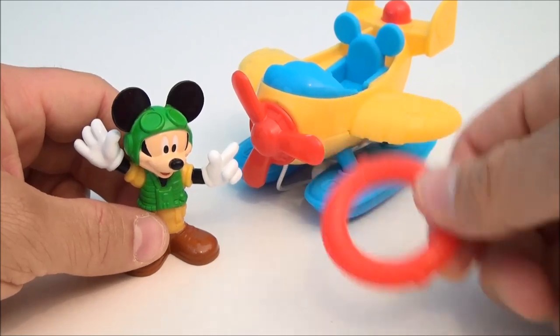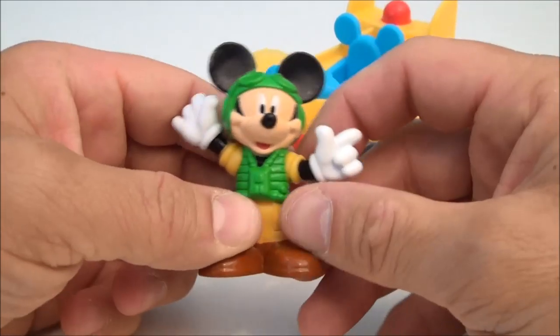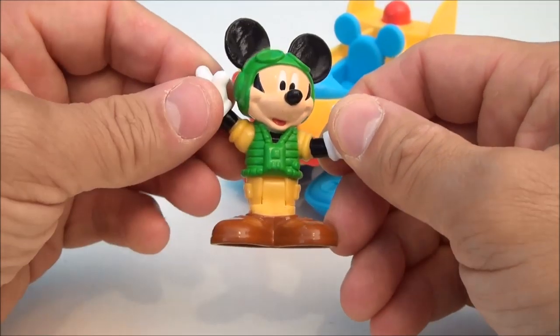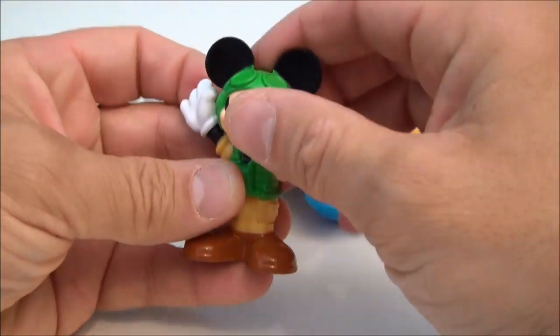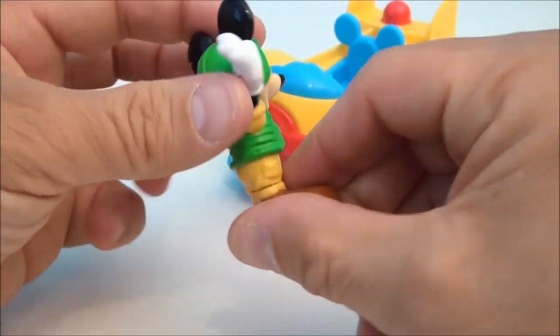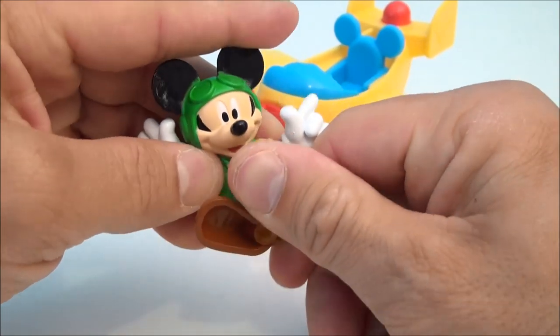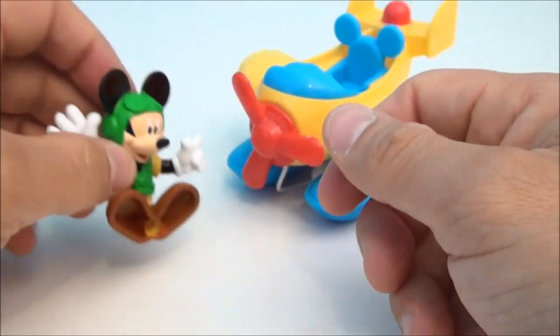You got this little life preserver to save somebody with and you got a little Mickey figurine. Mickey, all he has for movement or articulation here is that he can sit. You can go like that and you can make him sit down.